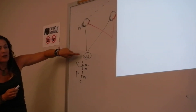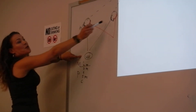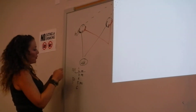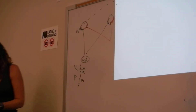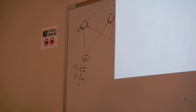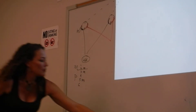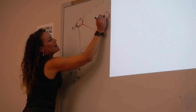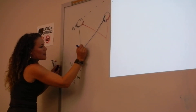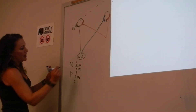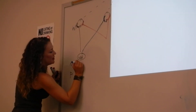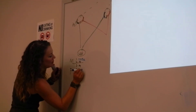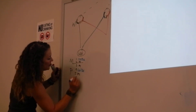In the left lateral geniculate nucleus, you're also getting information from the right eye about the right side of the world. So this information is also going to go to the lateral geniculate nucleus, and it's going to be processed on layers one, four, and six.